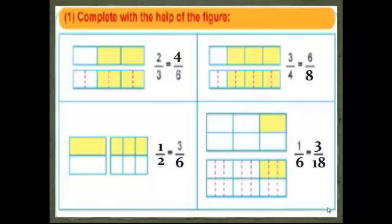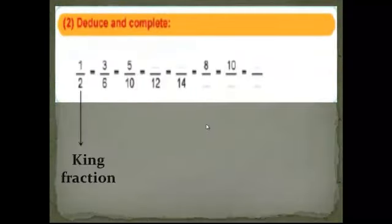Open pupils book page 50, exercise number 2. Here we have 1 over 2 — we will call it the king fraction. Look at the king fraction: 1 over 2 equals space over 12. 2 becomes 12, so it becomes bigger. 2 by 6 equals 12, so we multiply by 6 down and multiply by 6 up: 1 by 6 equals 6.